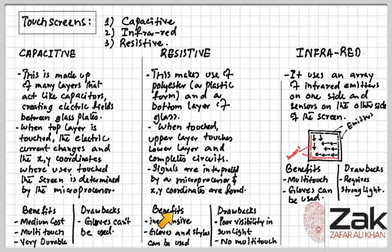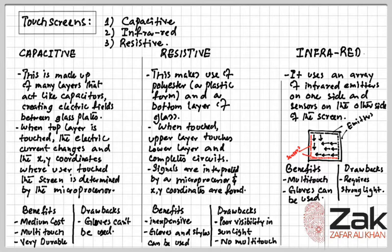The benefits of resistive screens are relatively inexpensive technology. It is possible to use bare fingers, gloved fingers, or a stylus to carry out the input operation. The drawbacks are that screen visibility is poor in strong sunlight, it does not permit multi-touch capability, screen durability is only fair, it is vulnerable to scratches, and the screen wears out over time.